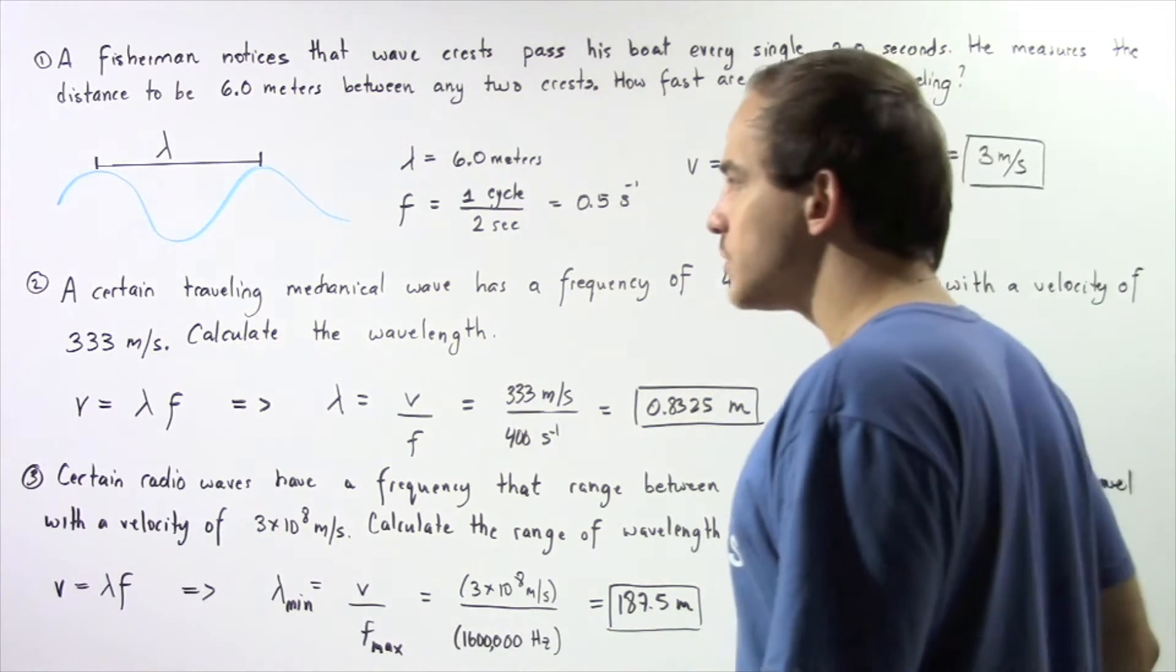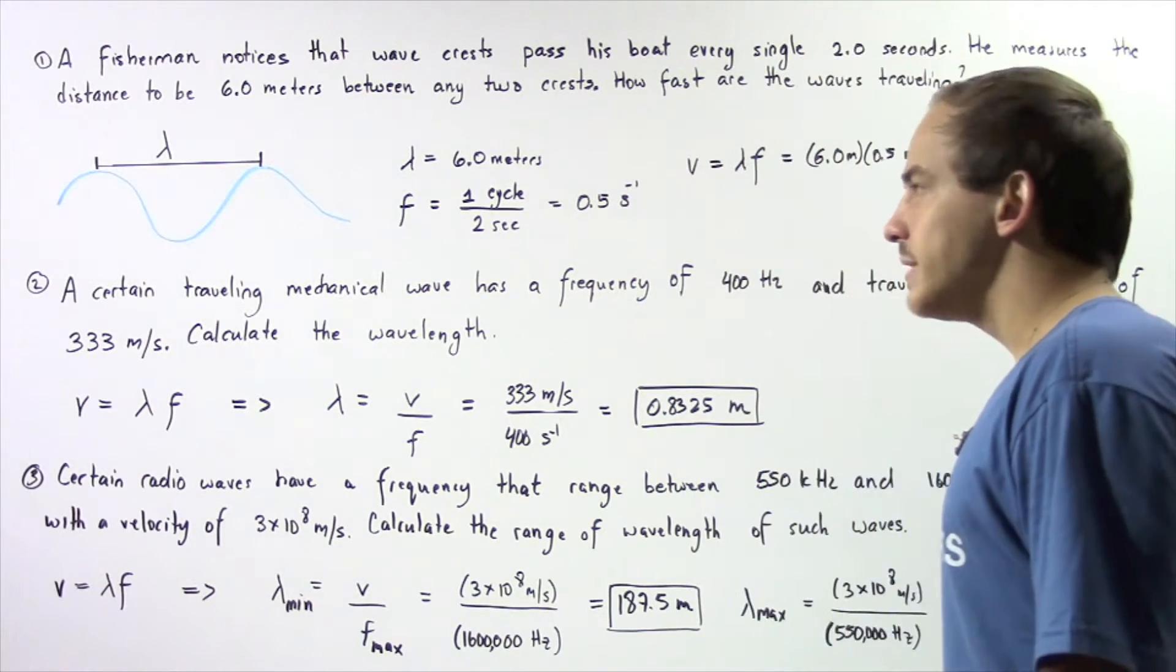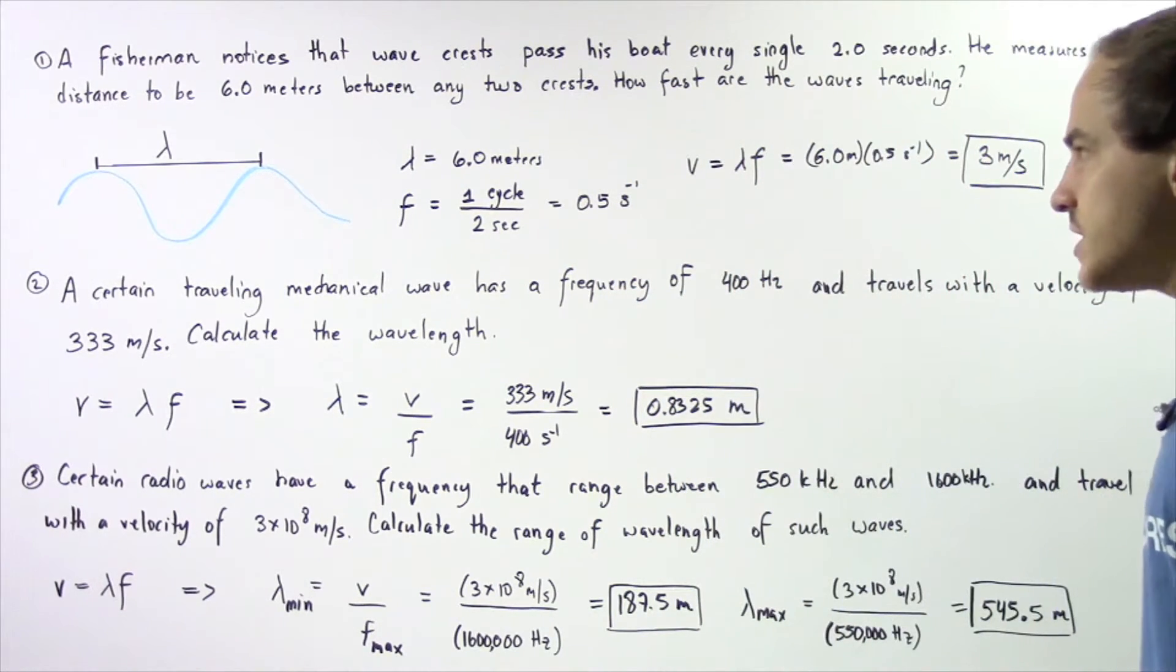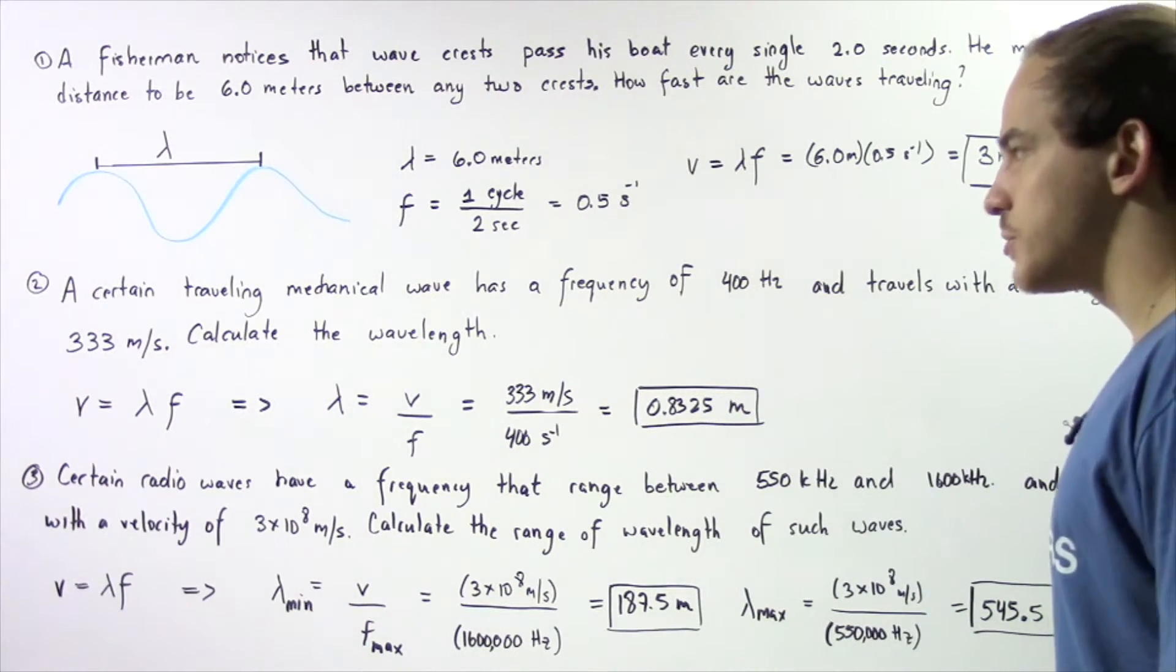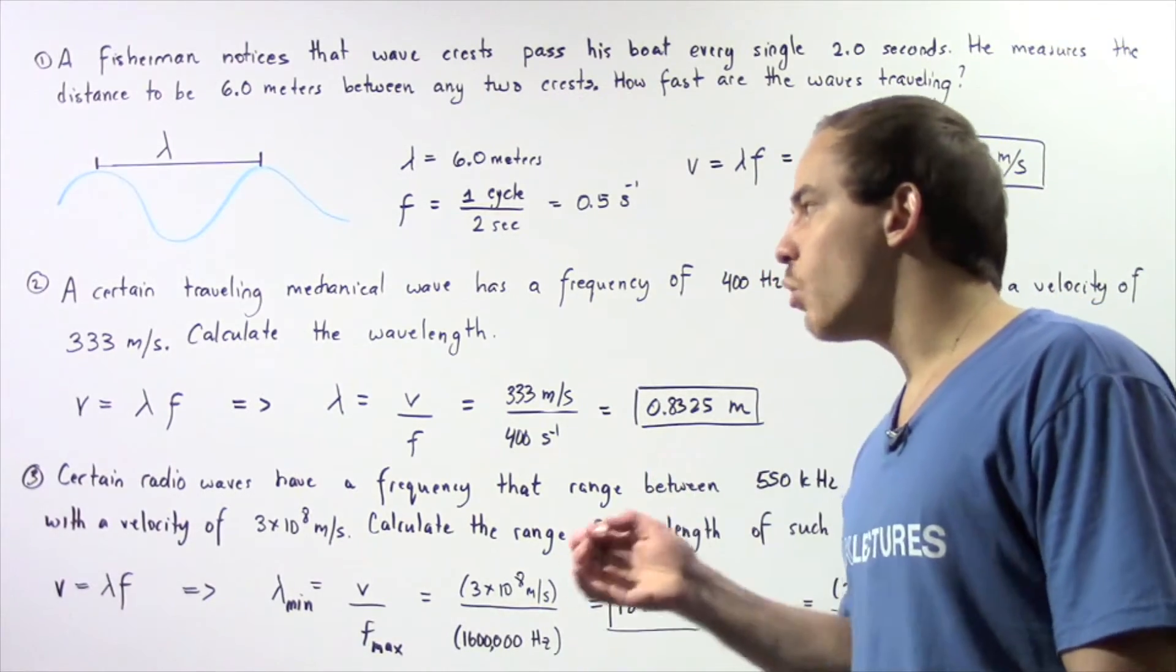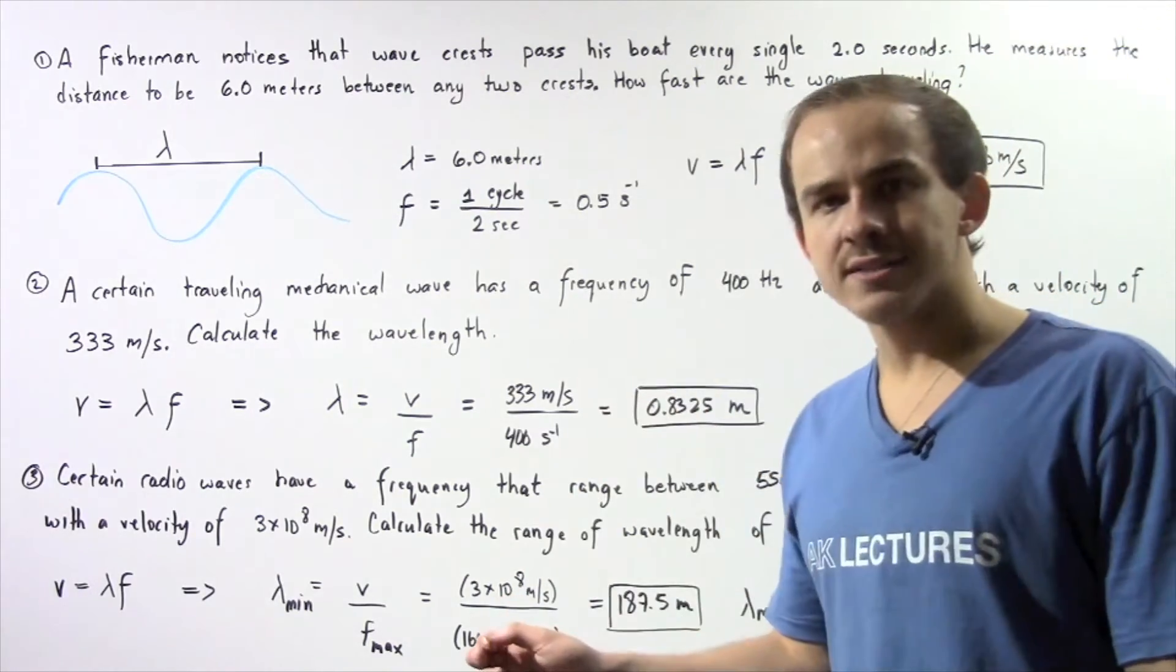Now let's move on to example number two. A certain traveling mechanical wave has a frequency of 400 hertz and travels with a velocity of 333 meters per second. So now we want to calculate the wavelength knowing the frequency and the velocity.